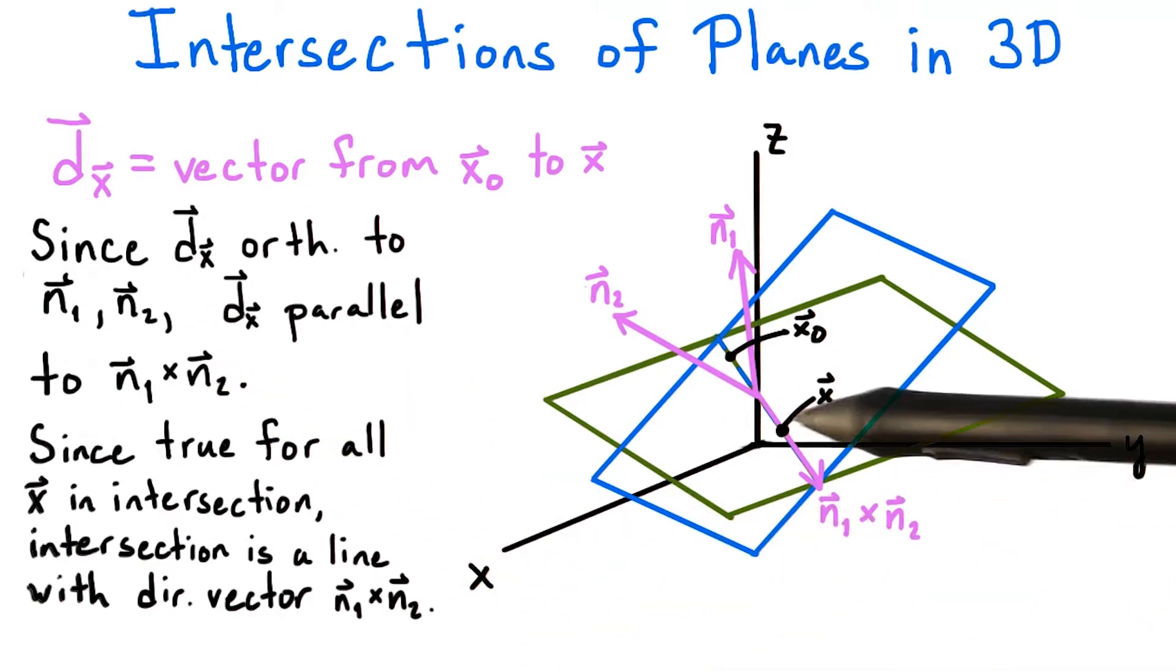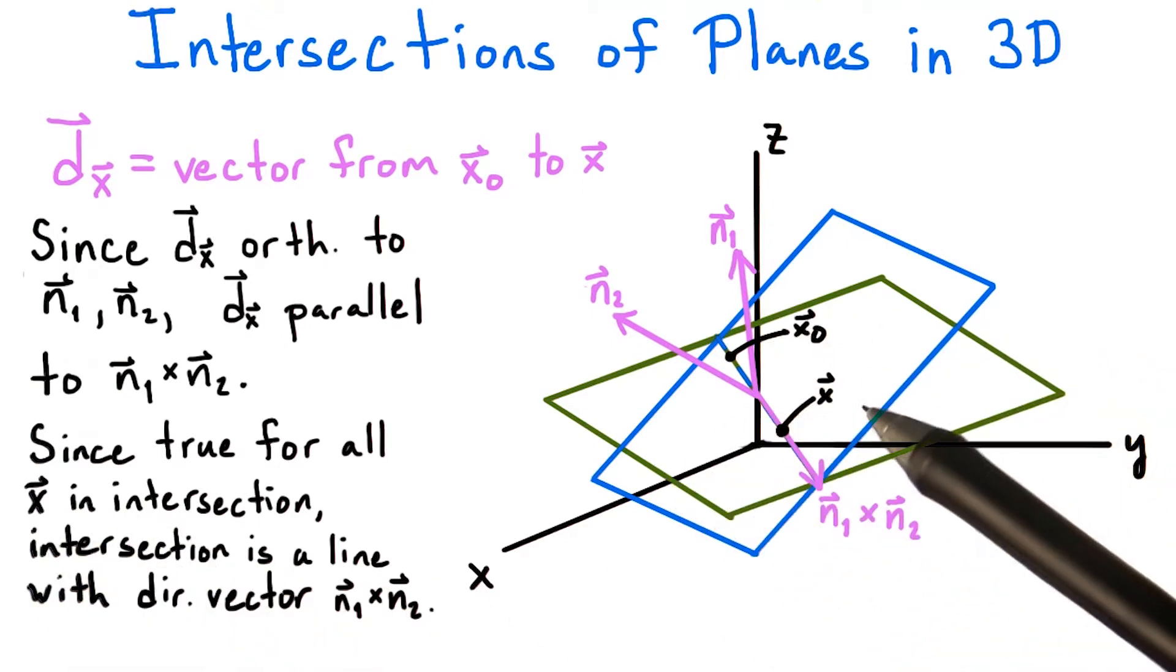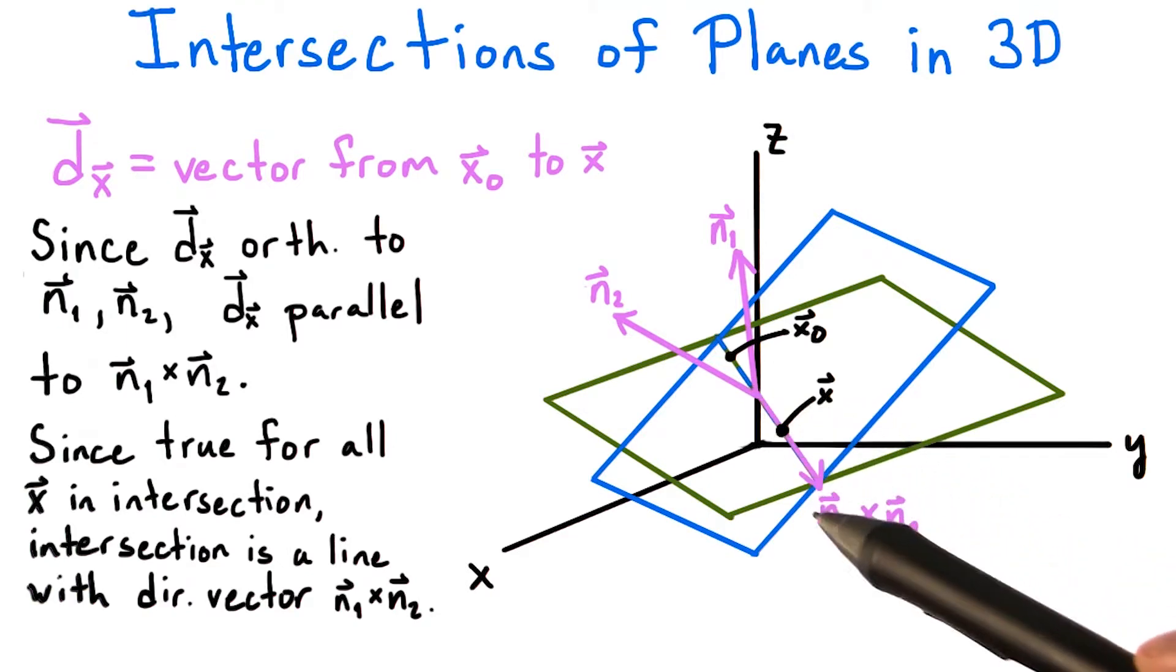Since dx is parallel to n1 cross n2, no matter what x we picked, that means the intersection of these two planes has to be a line that is parallel to n1 cross n2.